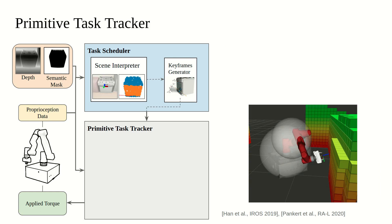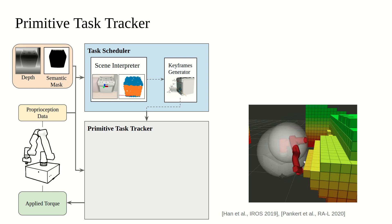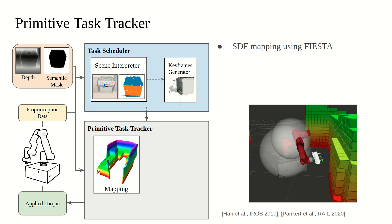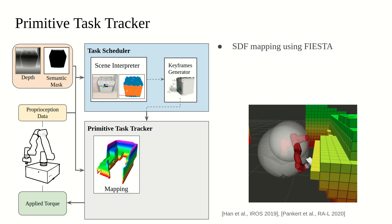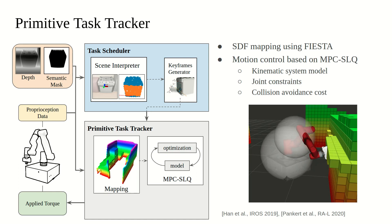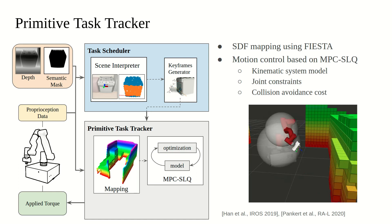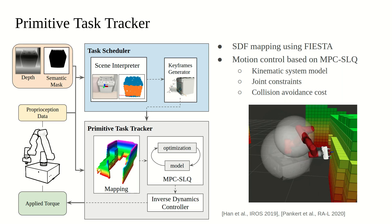This generated plan is then passed to the primitive task tracker. For representing the environment, we employ signed-distance field maps created using the Fiesta algorithm. Using this map representation, we formulate an MPC problem with the robot's kinematic model and various constraints. The receding horizon controller provides the joint velocity command, which is passed to an inverse dynamics controller to generate the joint torque command for the robot.